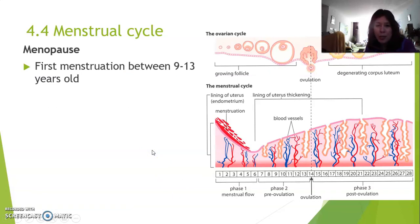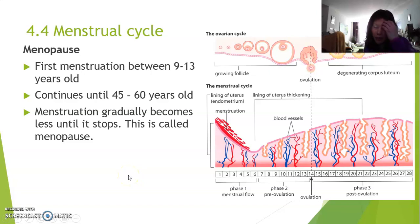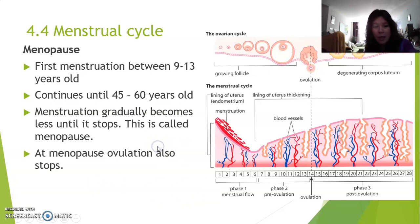The first menstruation in girls starts at the age of between nine and thirteen, and continues until about the age of 45 to 60. This stopping is called menopause. During menopause, menstruation gradually slows down, hormones in the body start to change, some hormones stop being produced, ovulation also stops, and that means when a woman enters menopause, she cannot get pregnant anymore.